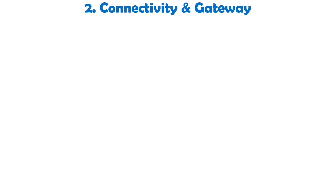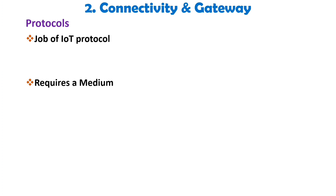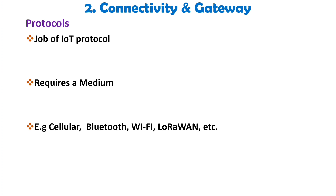Let's discuss the second component of IoT, which is connectivity and gateway. IoT protocols play a crucial role in enabling data transfer, ensuring secure and reliable connections between devices. Once the data is collected by sensors, it necessitates a means of transportation — a communication channel between sensors and the cloud. In the realm of IoT, there exists a variety of communication protocols utilized based on factors such as range, power requirements, data rates, bandwidth, and cost. For instance, cellular, Bluetooth, Wi-Fi, and LoRaWAN are some of the commonly used protocols. These IoT standards and protocols form an invisible language enabling seamless communication between physical objects.